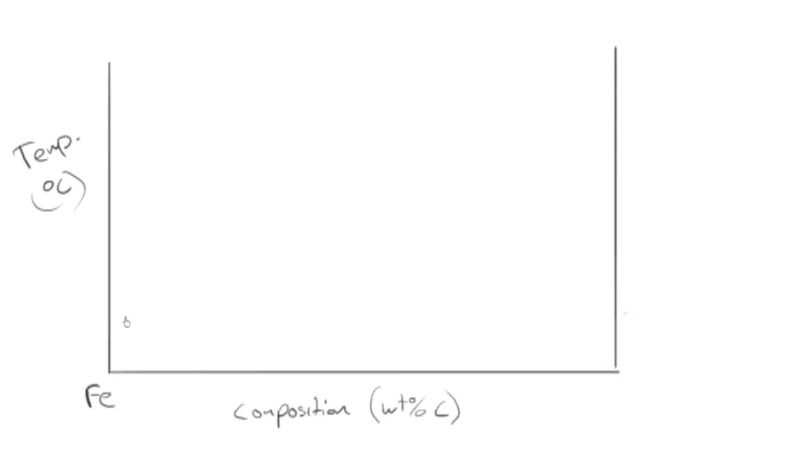Now there's a few interesting features on this phase diagram. One of them is this isotherm, it's called. It's a horizontal line.